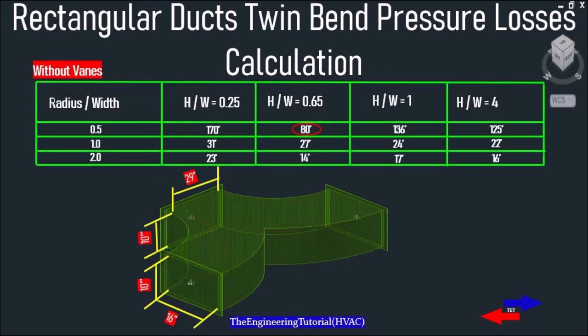Dynamic losses occur due to flow across fittings such as elbows, offsets, takeoffs, and any restrictions, or whenever the airstream makes turns, diverges, narrows, widens, enters, or passes through fans, dampers, gates, coils, and filters. Friction and turbulent flow play a big role, so before designing and installing ducts we have to understand these steps.